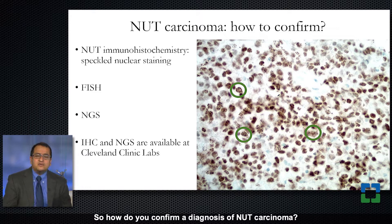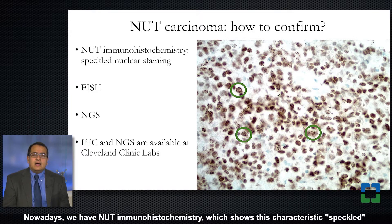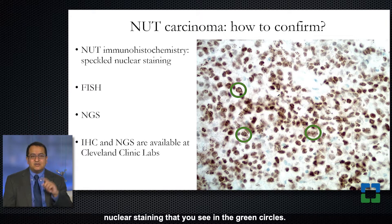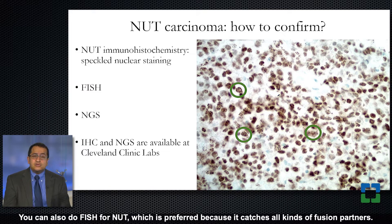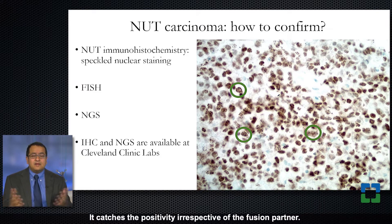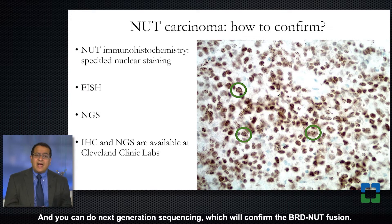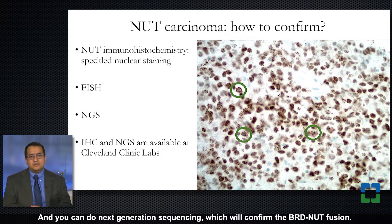How do you confirm a diagnosis of NUT carcinoma? We have a NUT immunohistochemistry which shows this characteristic speckled nuclear staining that you see in the green circles — quite characteristic and easy to read. You can also do FISH for NUT, which is preferred because it catches all kinds of fusion partners irrespective of which partner is involved. And you can do next generation sequencing, which will confirm the BRD4-NUT fusion.